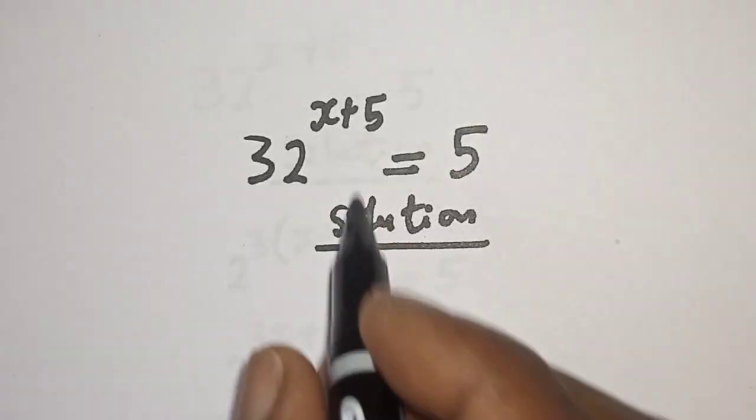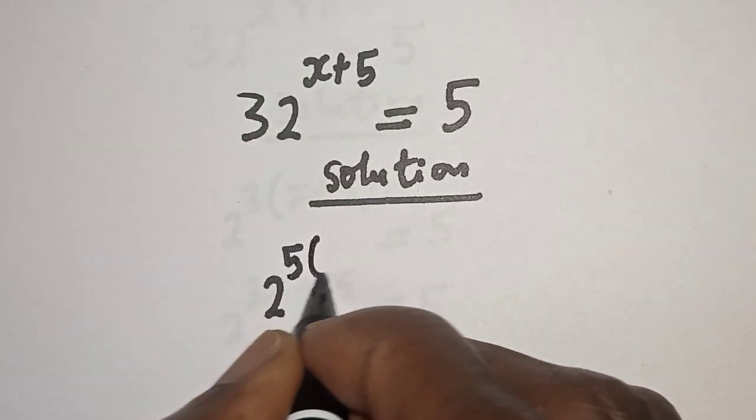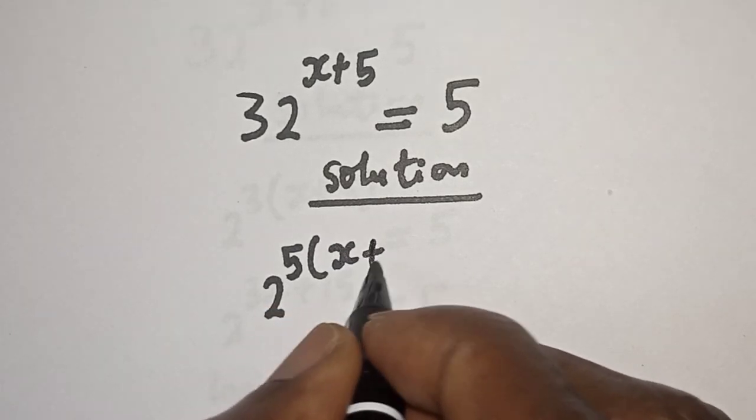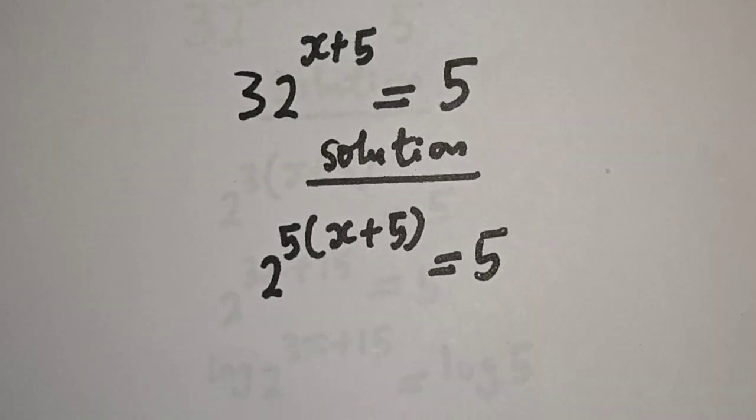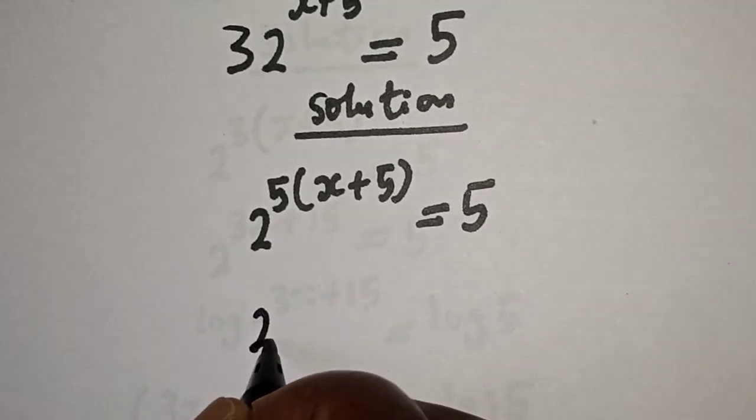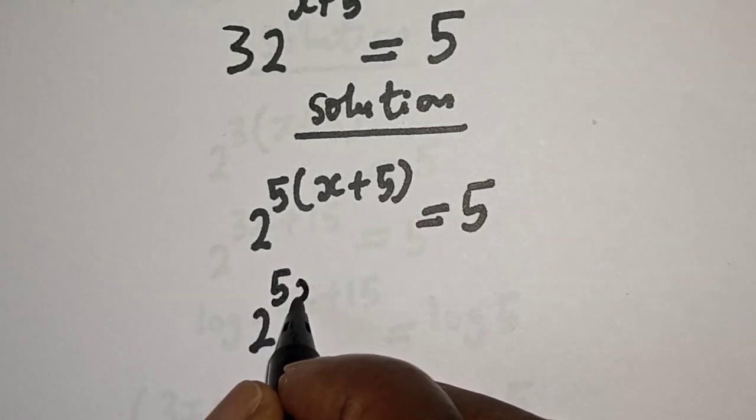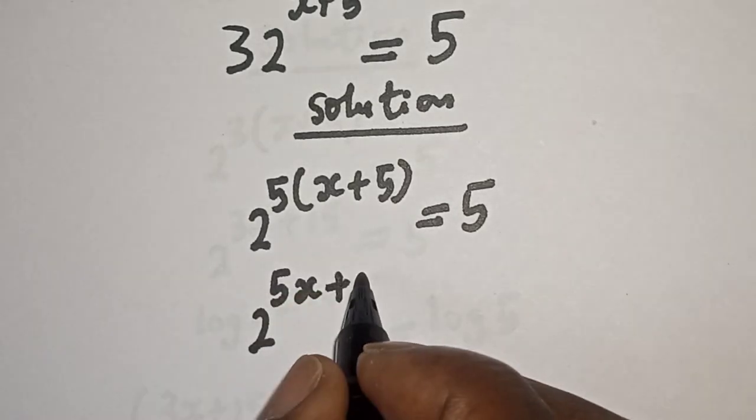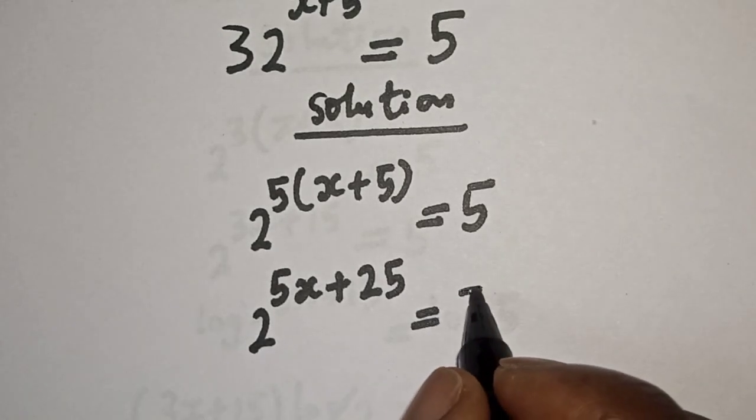32 raised to the power s plus 5 can be written as 2 raised to the power 5 times (s + 5), which equals 5. Then this is 2 raised to the power—let's open this bracket—5 times s is 5s, plus 5 times 5 is 25, so we have 2 to the power 5s plus 25 equals 5.